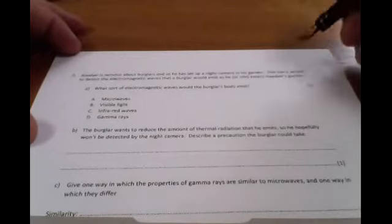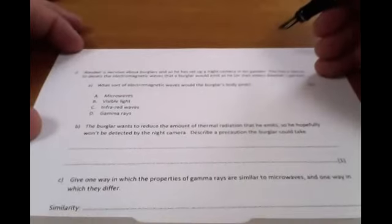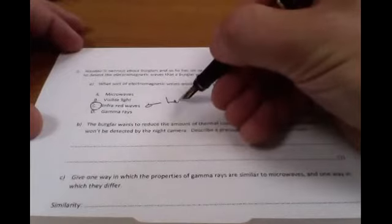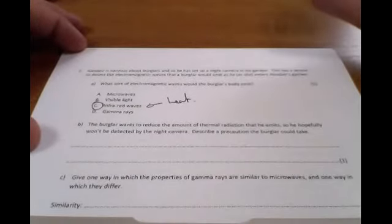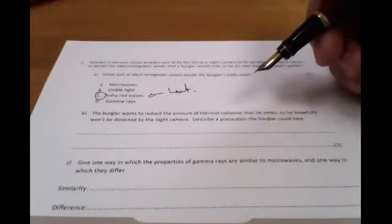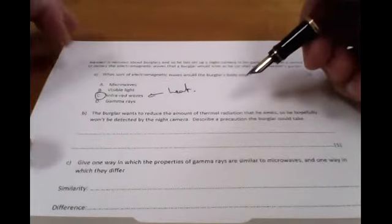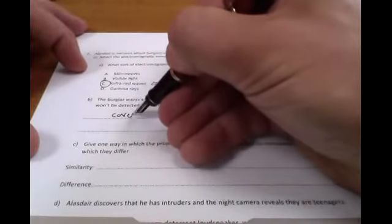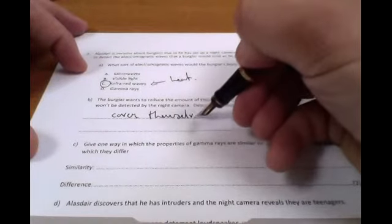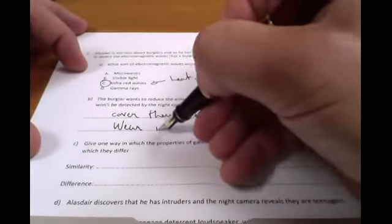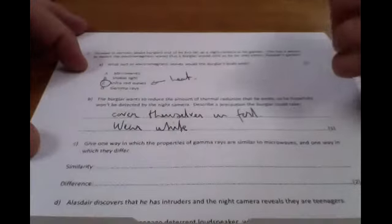Okay, moving straight on. Burglars in a garden, night camera in the garden. What sort of electromagnetic waves do the body of a burglar emit? Well, you should just know that they are infrared waves. Heat. Infrared waves are how heat is given out, and obviously bodies give out heat. If the burglar wants to reduce the amount of thermal radiation, what are they going to do? Well, there were so many fun answers. However, what we're trying to do here is reduce the infrared. So you could either cover themselves in foil, you could wear white because white surfaces emit less than dark surfaces.